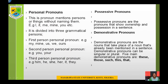Personal pronouns mention persons or things without naming them. Examples: I, it, me, my, you, etc. They are divided into three grammatical persons. First person personal pronouns — singular: my, me, our; plural: us, we, ours.